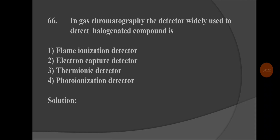Next question: In gas chromatography, the detector widely used to detect halogenated compounds is — option 1: flame ionization detector, option 2: electron capture detector, option 3: thermionic detector, option 4: photo ionization detector. The correct answer is option 2: electron capture detector.